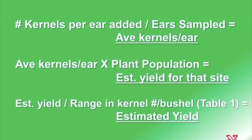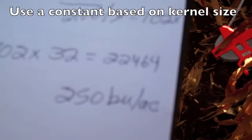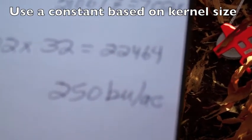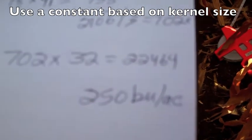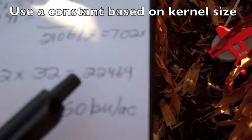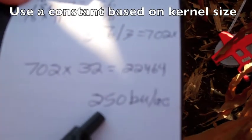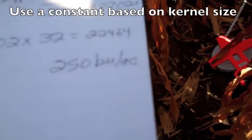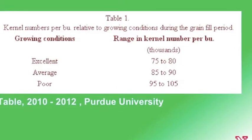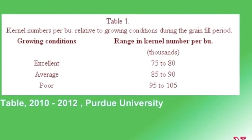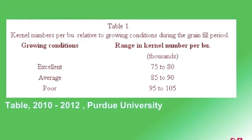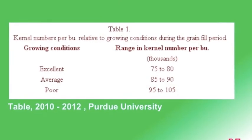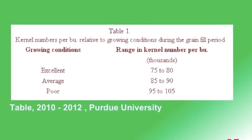We want to determine yield from that. We know that it takes about 90,000 kernels to fill a 56-pound bushel basket, so a standard constant used is the number 90. If we divide our kernel number by 90, we get that this field yields around 250 bushels per acre. Now that constant can change — if you have a drier year such as this past year, that constant will go up. You can use a table from Purdue University to figure out which constant you should use.